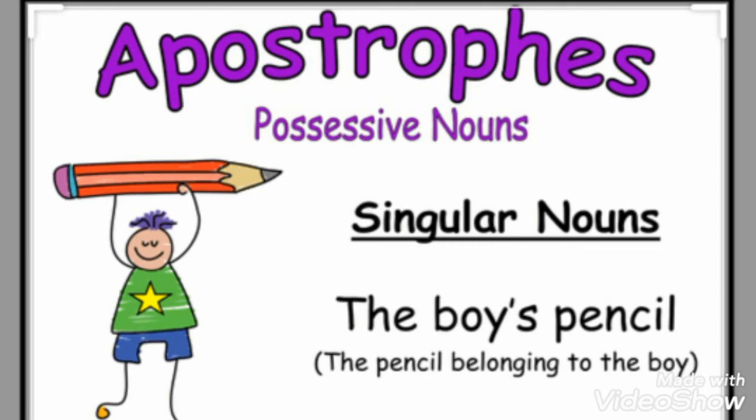Apostrophe: Basically, an apostrophe shows ownership. For example, 'the boy's pencil.' In this example, the pencil is belonging to the boy.